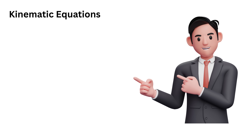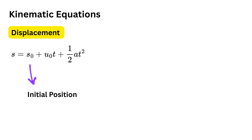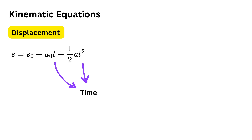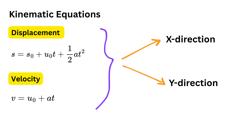We only need two kinematic equations. The displacement equation is s equals s₀ plus u₀t plus half a t squared, where s₀ is the initial position, u₀ is the initial velocity, a is the acceleration, and t is the time — this helps find the position of the projectile at any time. The velocity equation is v equals u₀ plus at, which helps find how fast the projectile is moving at any moment. Apply these equations separately in the horizontal and vertical directions using the correct components.